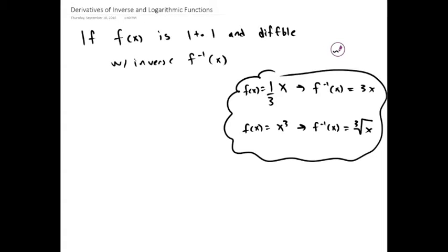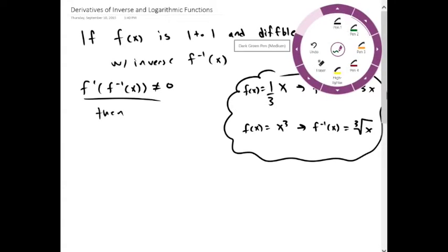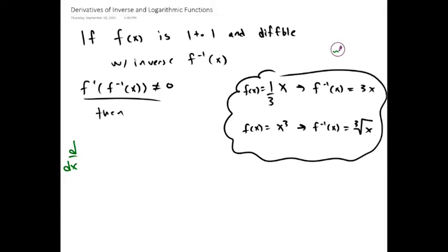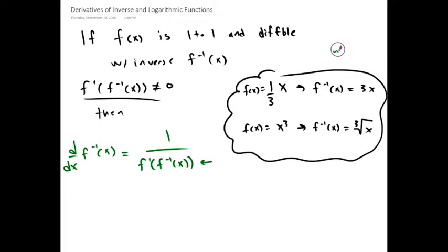If we have a function with an inverse, and this quantity f'(f^(-1)(x)) not equal to 0, then the derivative of our inverse function, which is what we're trying to find, equals 1 over f'(f^(-1)(x)). That's why this can't be 0. We can't have a 0 in our denominator.